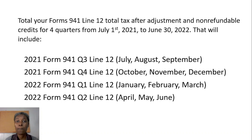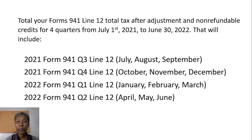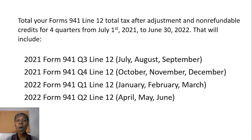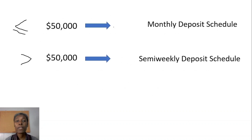As a Form 941 filer, you will pull your tax returns for Q3 and Q4 of 2021, and Q1 and Q2 of 2022 — that is, the quarter starting July 1st, 2021 through the quarter ending June 30th, 2022. That's a one-year, four-quarter time frame. You total those four quarters together.